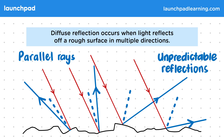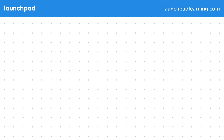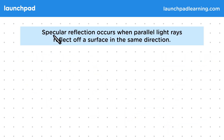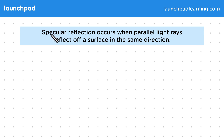But will reflections always be diffuse? Specular reflection occurs when parallel light rays reflect off a surface in the same direction. Again, when we use the term specular, we're usually referring to visible light waves.